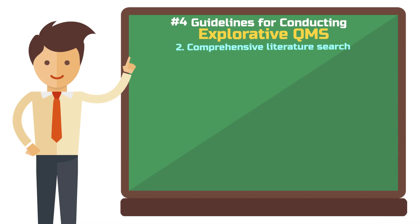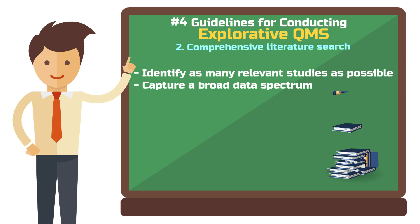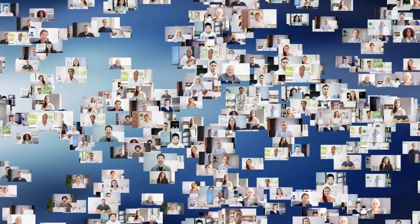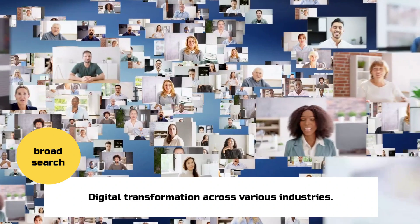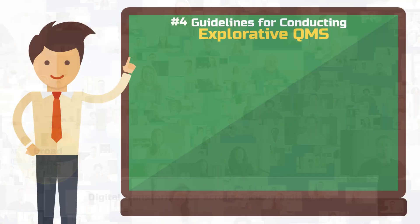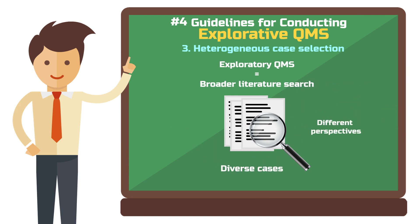Second step: conduct a broad search to capture diverse data, or focus on particularly rich studies that provide deep insights into specific aspects of your topic. For example, collect case studies from various industries to understand how digital transformation unfolds in different settings. Third step: include diverse and contrasting cases to uncover new perspectives and patterns that might not emerge in a homogeneous data set.